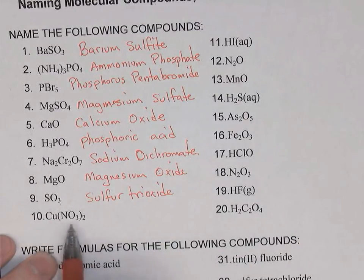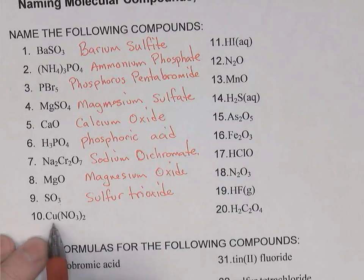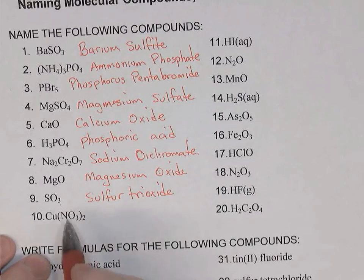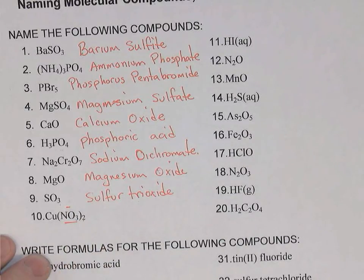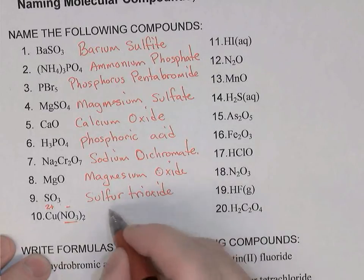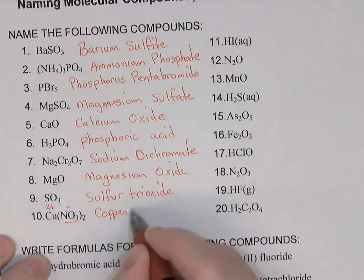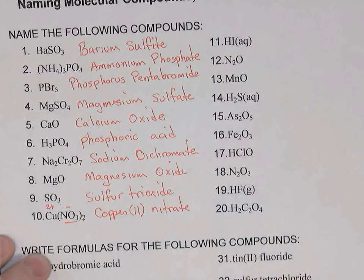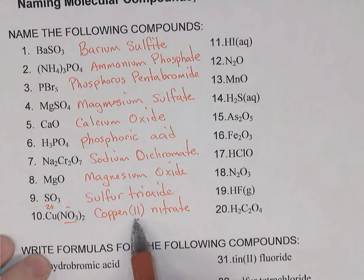Number 10 is an ionic compound — it starts with a metal, and for the first time we're seeing a type 2 cation: copper. Copper has more than one charge; it can be +1 or +2, so we have to indicate that in the name. There are two nitrates bonded to it, and nitrate has a charge of -1. Since there are two nitrates bonded to the one copper, copper's charge must be 2+. Therefore I'll call this copper(II) nitrate. For type 2 cations, you must include a Roman numeral after the name of the metal indicating its charge.